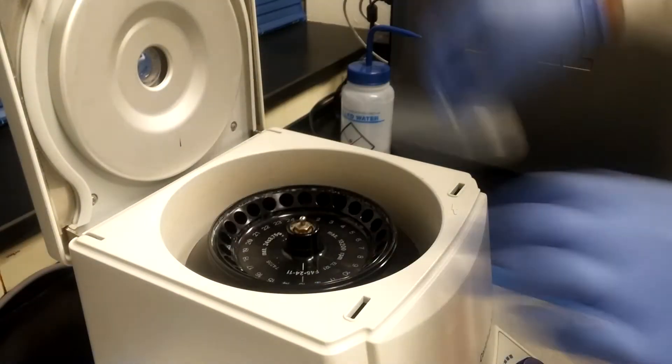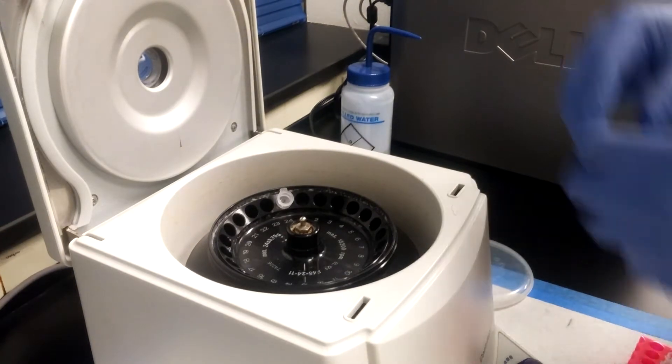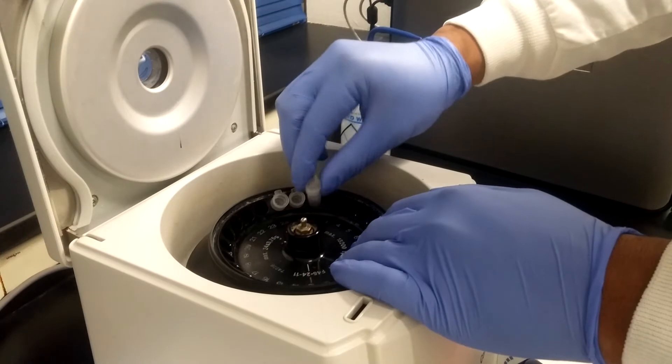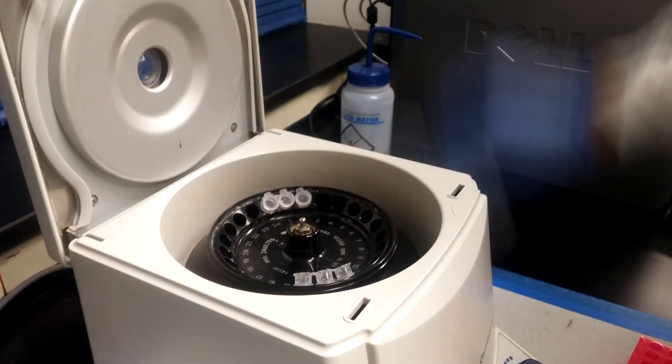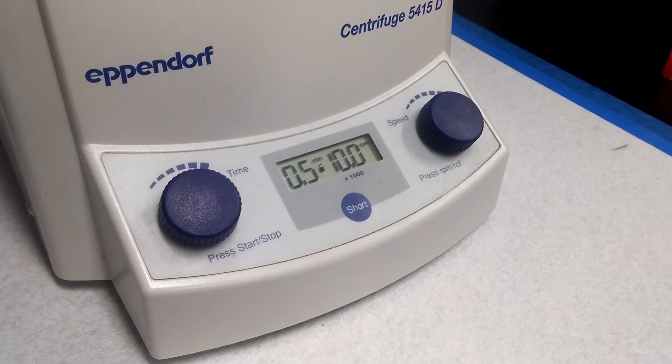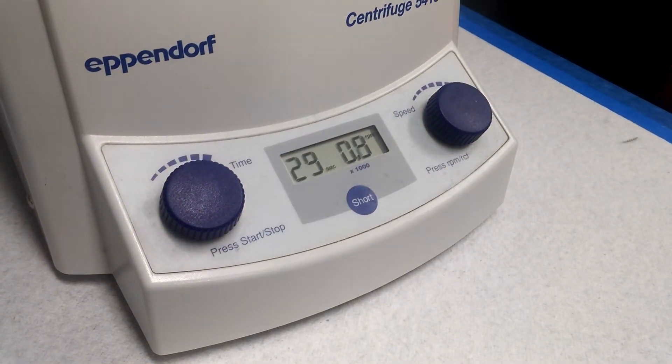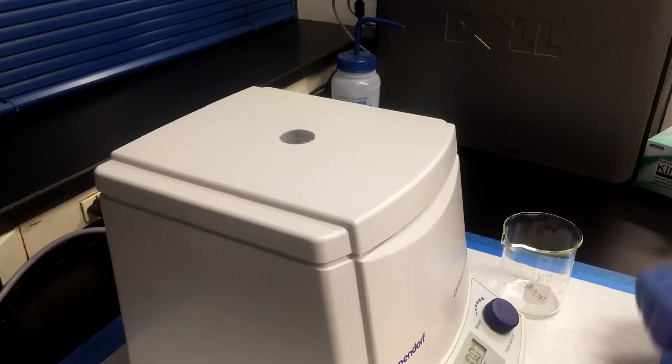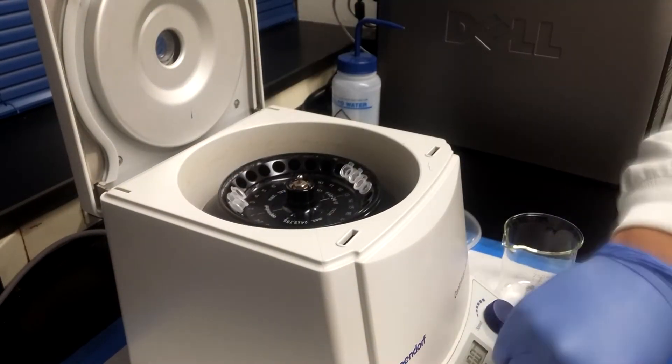The tubes are then placed into a centrifuge at 10,000 RPM for 30 seconds. After centrifuging, the buffer present in the collection column of each tube is discarded into liquid waste.